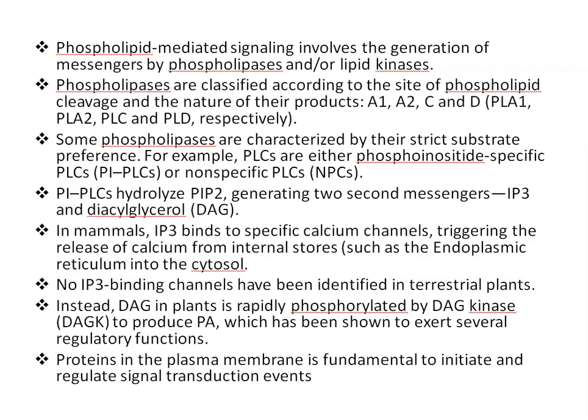Some phospholipases are characterized by their strict substrate preference. For example, phospholipases C are either phosphoinositide-specific PLCs (PI-PLCs) or non-specific PLCs. PI-PLCs — phosphoinositide-specific PLCs — hydrolyze PIP2, that is phosphatidylinositol 4,5-bisphosphate, generating two second messengers.